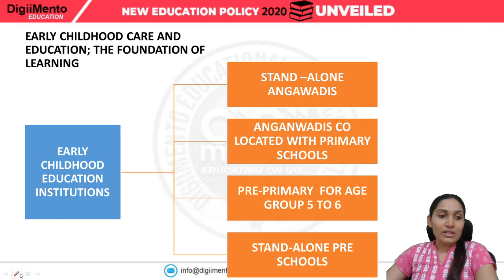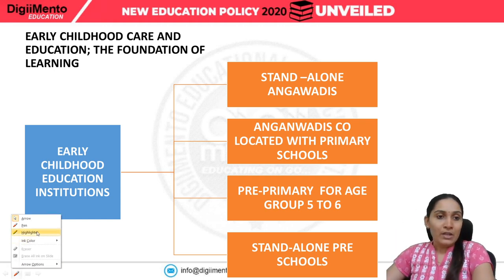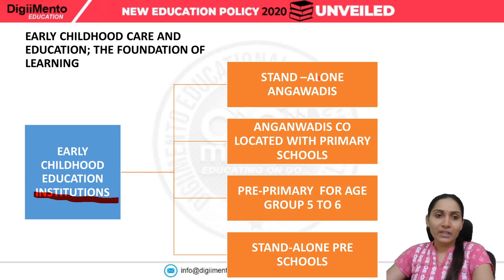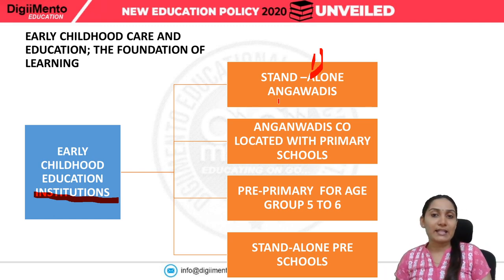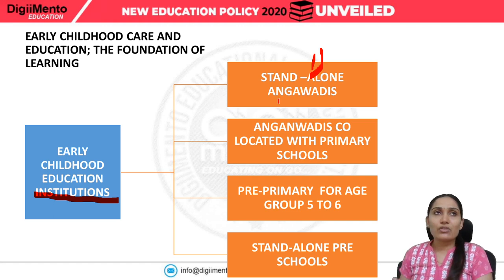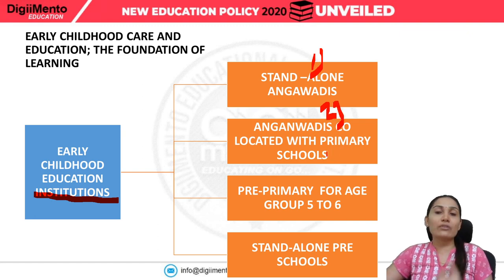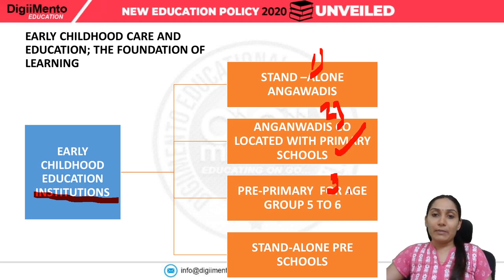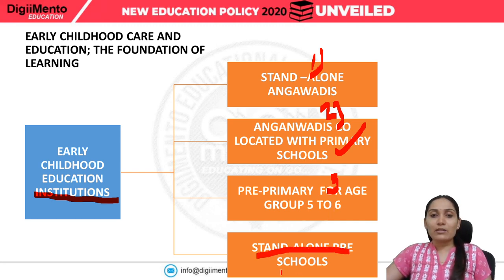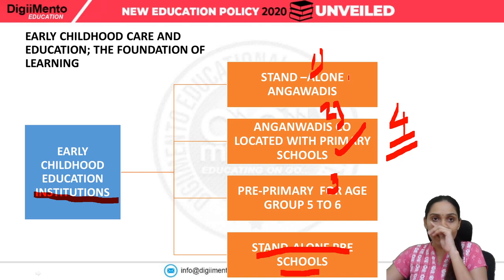Institutions providing early childhood education fall into four categories: stand-alone Anganwadis, which are independent from primary schools; Anganwadis located within the premises of primary schools; pre-primary schools such as kindergarten onwards; and stand-alone pre-schools. These four categories of institutions will deliver Early Childhood Care and Education.